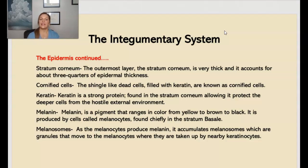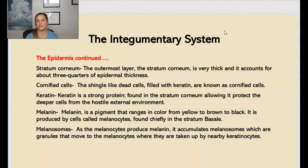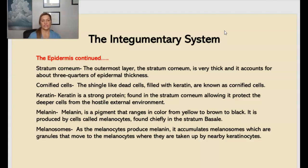We have melanin, a pigment that ranges in color from yellow to brown to black, and it is produced by cells called the melanocytes, found chiefly in the stratum basale. Next, we have the melanosomes. As the melanocytes produce melanin, it accumulates into melanosomes, which are granules that move to the melanocytes where they are taken up by the nearby keratinocytes.